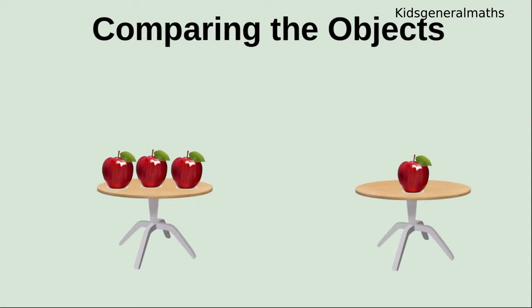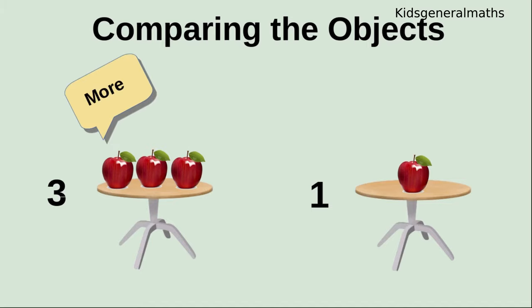First we are going to compare these two objects. 1, 2, 3. The first table has 3 apples. The next table has 1 apple. While comparing these two tables, 3 is more and 1 is less.